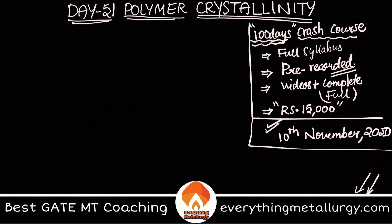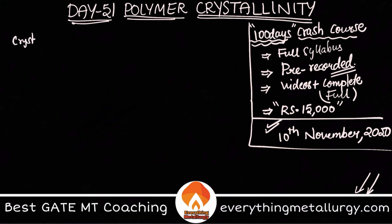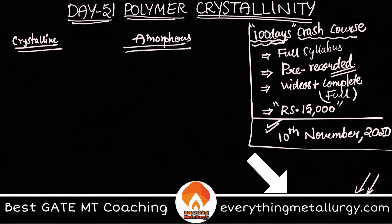So what is crystallinity? Before moving to polymer crystallinity, I want to explain what crystalline solids are. Solids are of two types: crystalline solids and amorphous solids. In crystalline solids, there is good packing with proper periodicity and symmetry in the atomic arrangement. Whereas in amorphous or non-crystalline solids, atoms are randomly arranged with no particular periodicity, even in the short range.